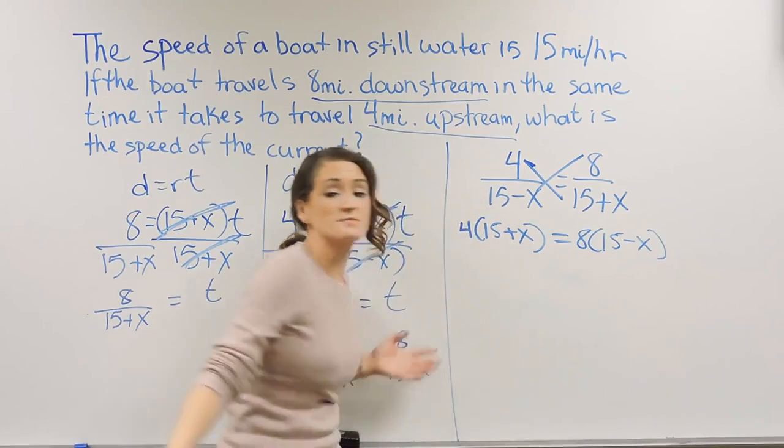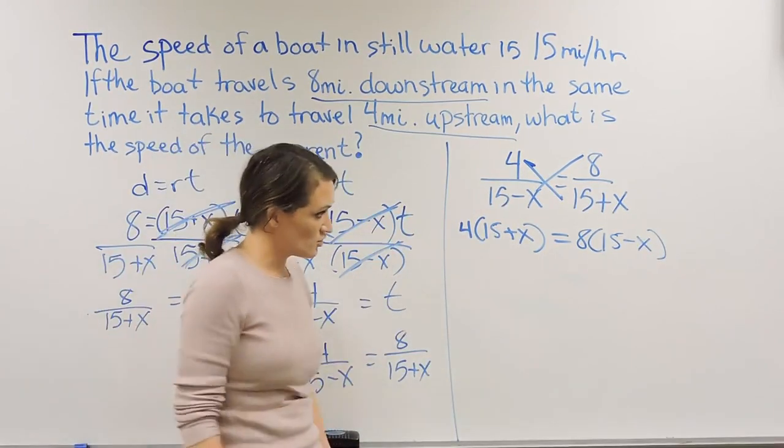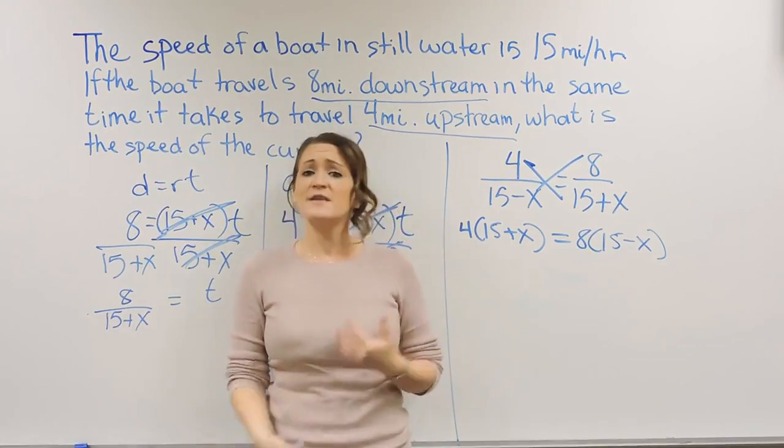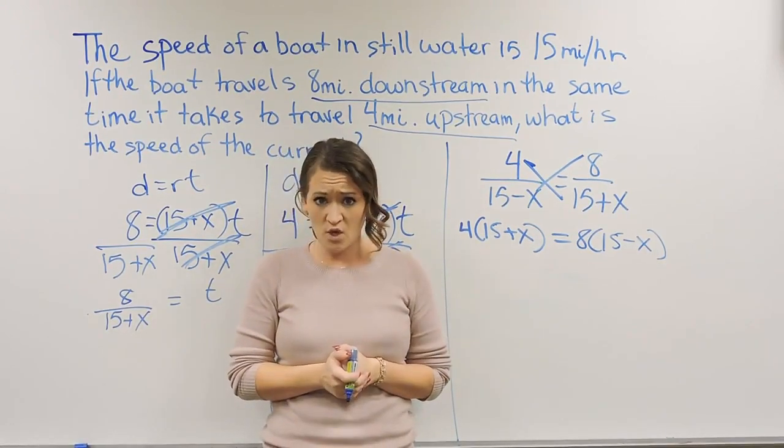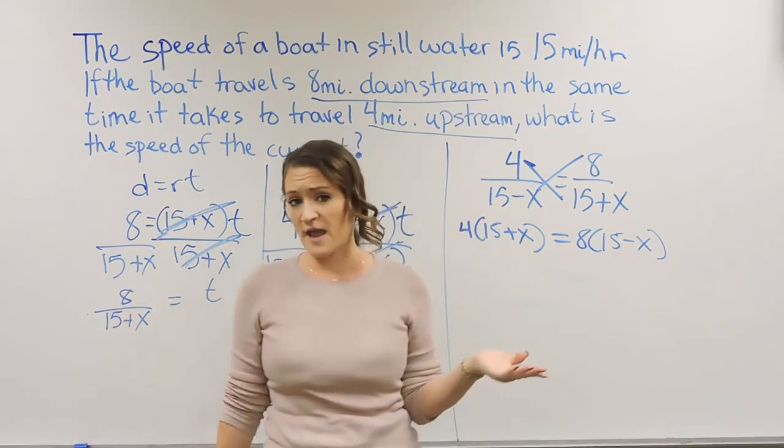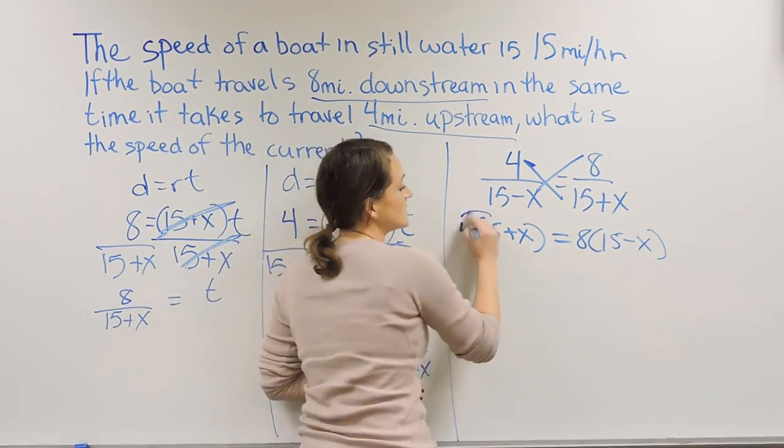Okay, so that's how you cross multiply in solving a proportion. After I cross multiply, this is just a matter of using my solving equation steps to simplify down this equation and solve for X, starting with distributing.